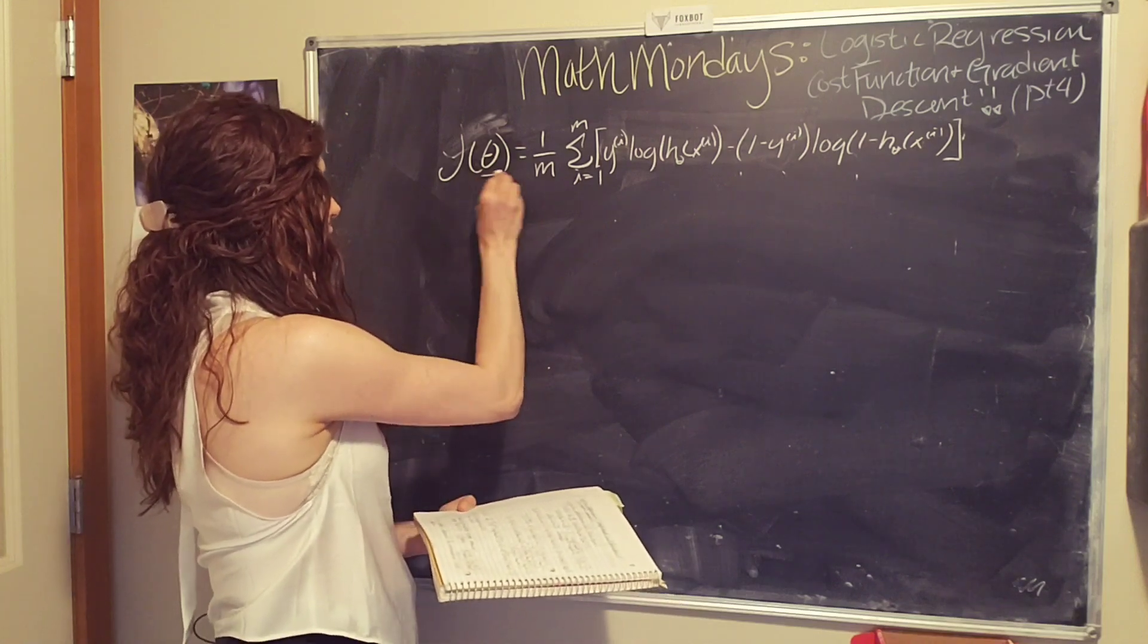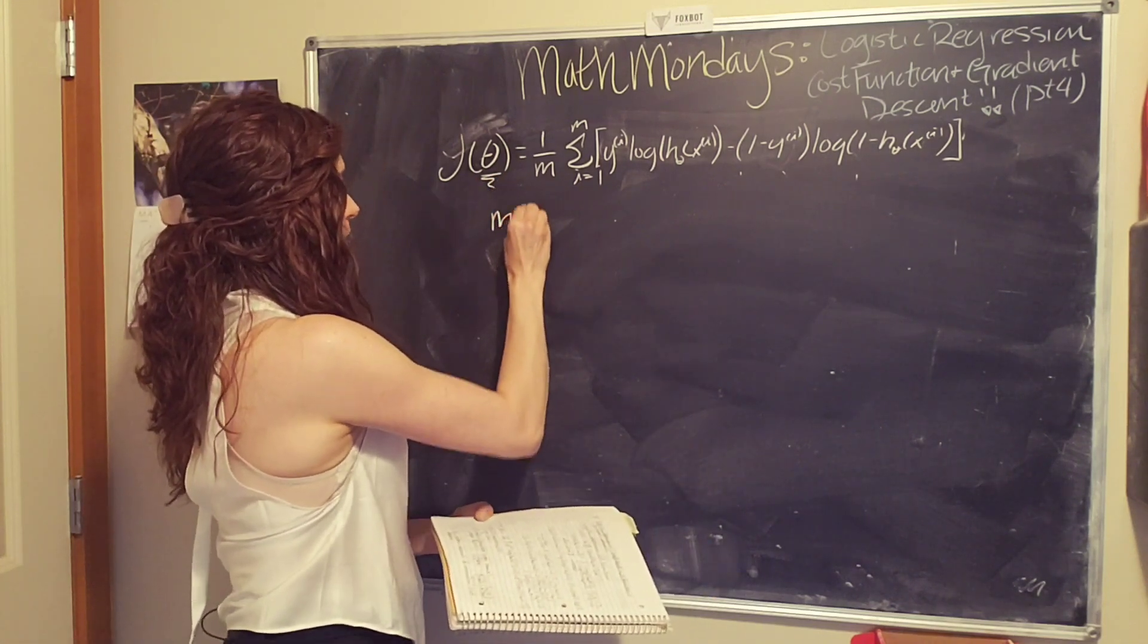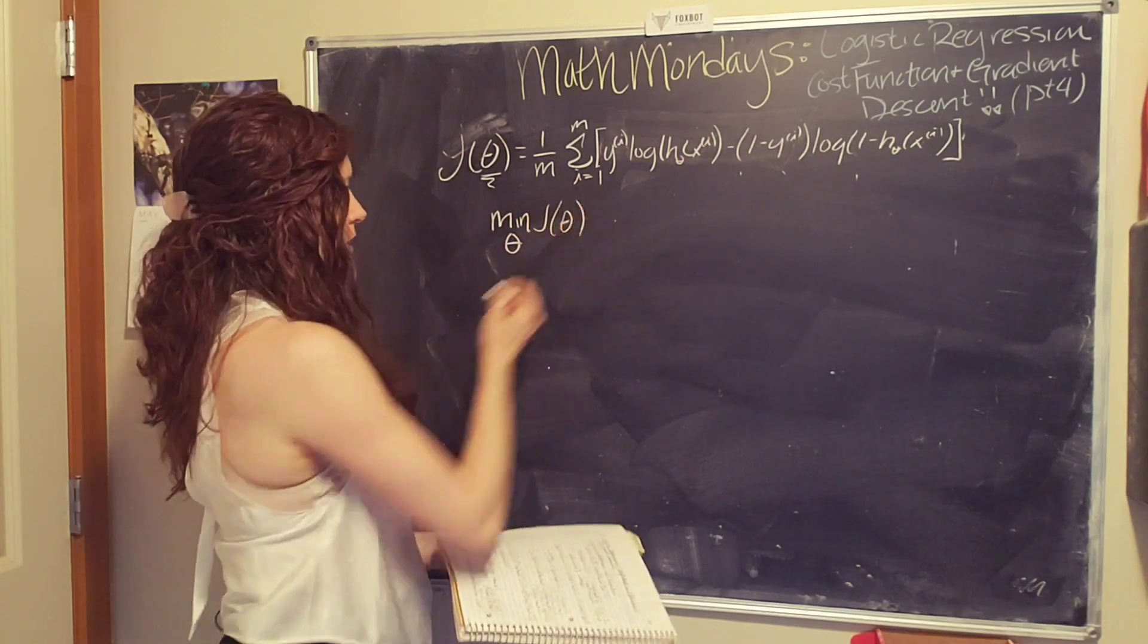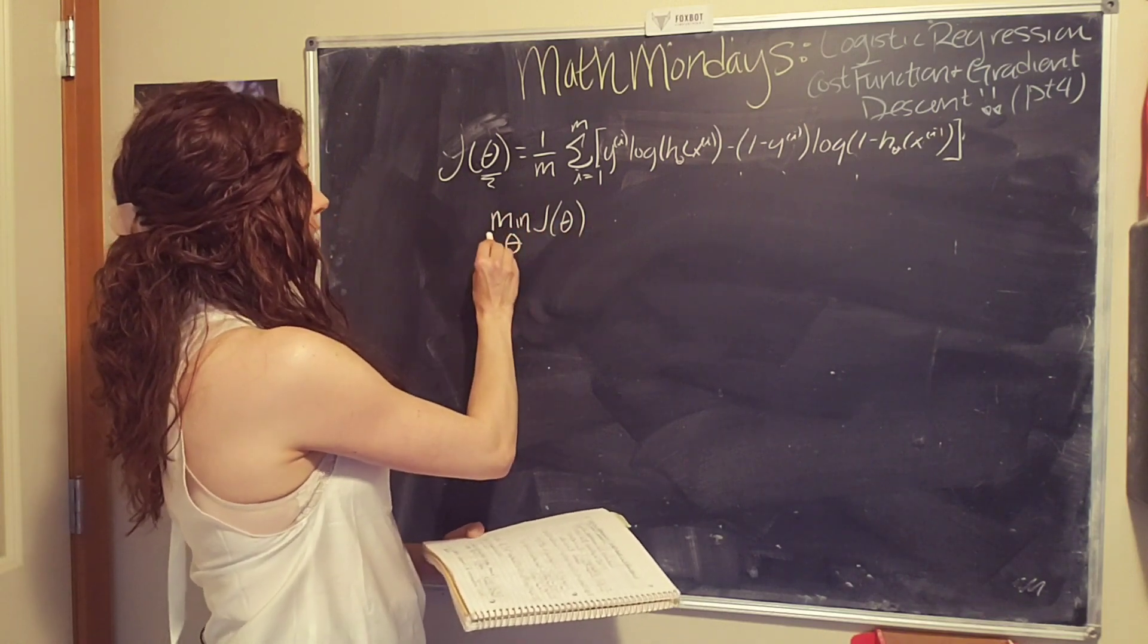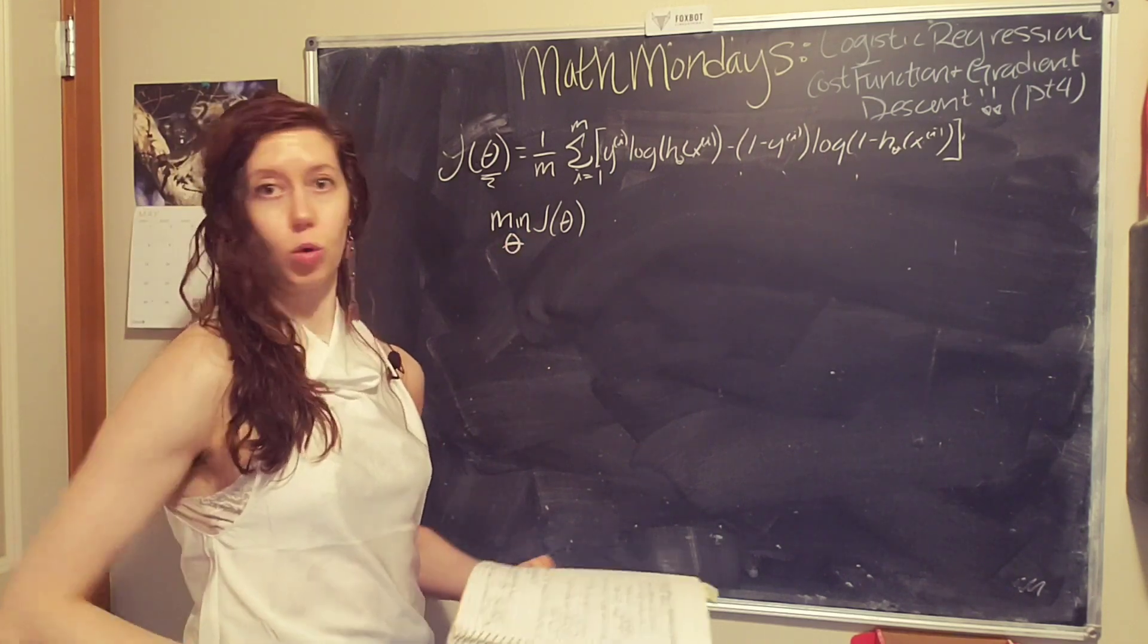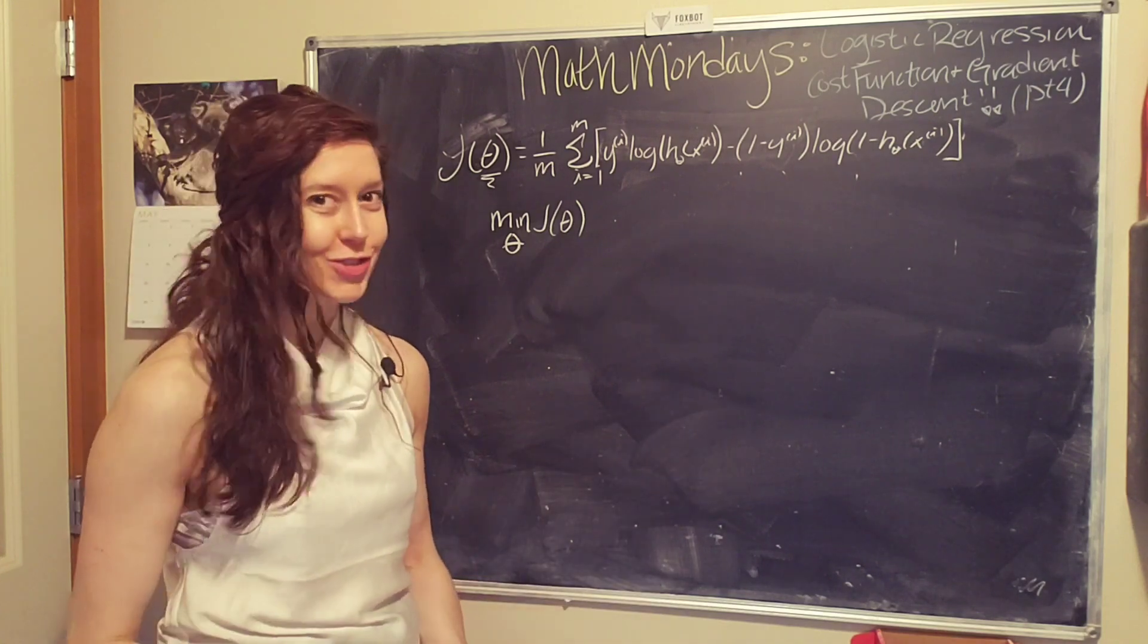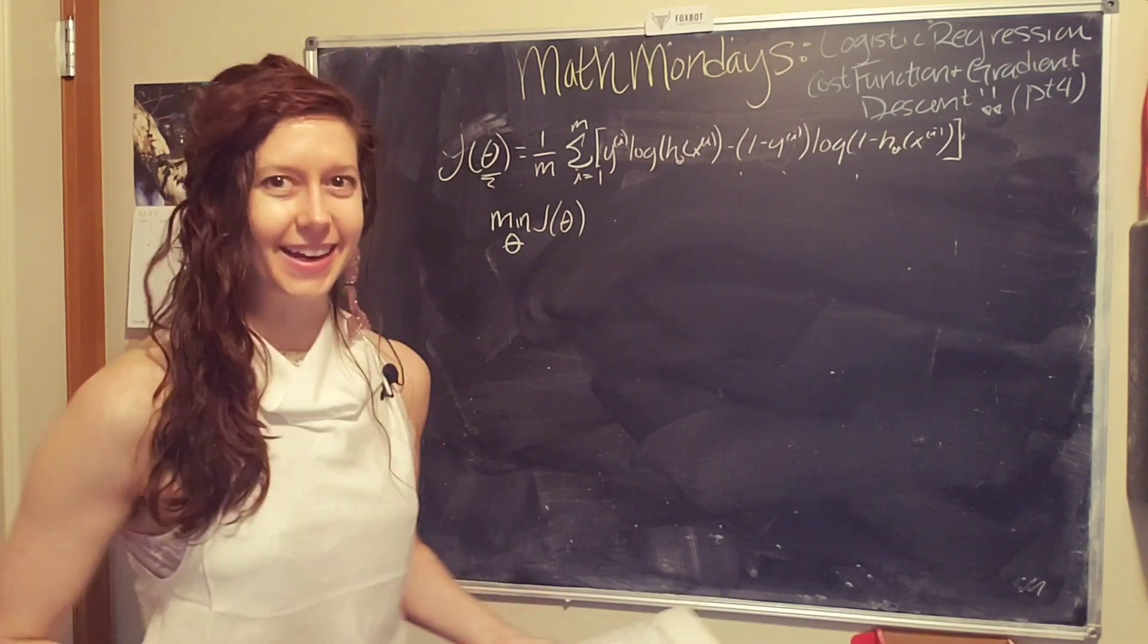Okay, so we need to find our parameters of theta. And to do that, we want to minimize our cost function. So here's kind of like a pseudocode way of writing it or mathy way of writing it. So we want to minimize the cost function, which we are going to do so by picking or finding different parameters of theta. And just like we've done before, we're going to use gradient descent.